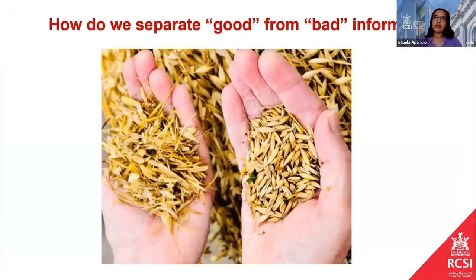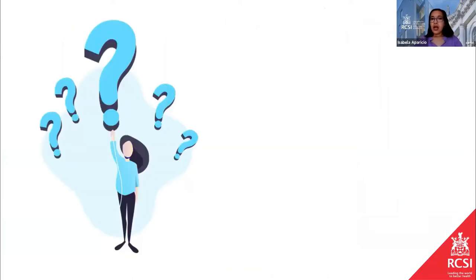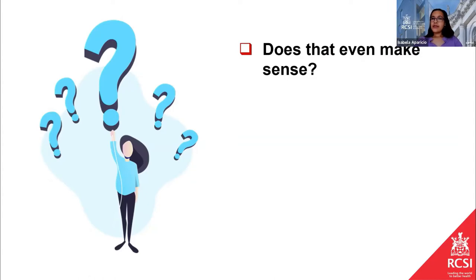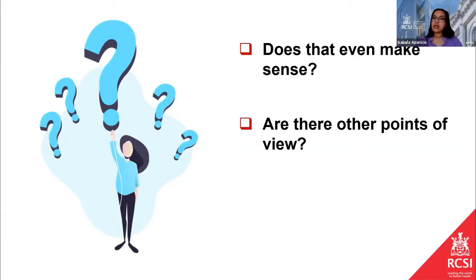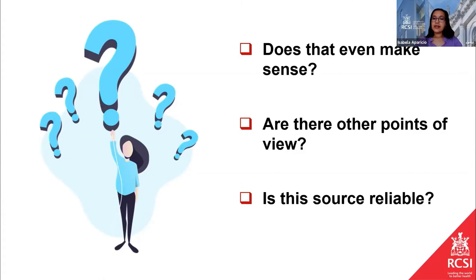Because perspectives are different and we have so much information, how can we separate the wheat from the chaff? I think a good way forward is to start questioning the information we receive — does it even make sense? Use common sense to analyze what you're hearing and reading. Are there other points of view? Can we try to focus on different ways of looking at the same piece of information? And most importantly: is this source reliable?